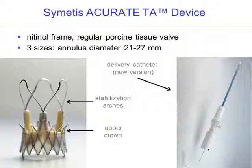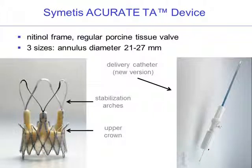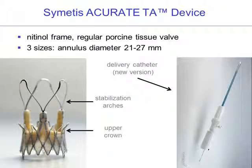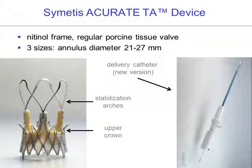This device is the Accurate TA, which just recently received CE-Mark approval. The valve itself is a porcine tissue valve mounted within a self-expandable Nitinol stent. It is available in three different sizes, allowing treatment of patients with an aortic annulus diameter from 21 up to 27mm.